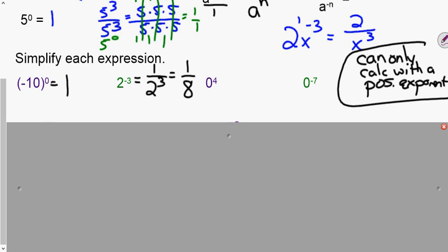Moving on. Zero to the fourth is just zero. Now, this one is a trick question that gets people all of the time. Zero to the negative seven, we're like, oh, zero to any power is zero. But it's not, because we can only calculate with a positive exponent, which means we need to flip this to the denominator. So we get one over zero to the seventh, which becomes one over zero. And we've talked about this when we talked about slope. What happens when you divide by zero? That's right. It's undefined.